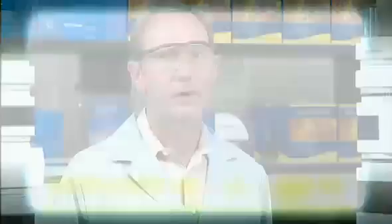THF at 215 nanometers may have such a high absorbance that it would be difficult to use in a gradient. Depending on the range of your gradient, the absorbance from the THF could be as high as two absorbance units. At a higher wavelength such as 254 nanometers, you would not have the same problem.